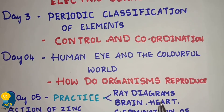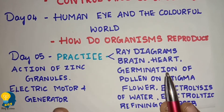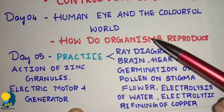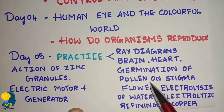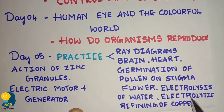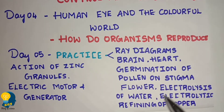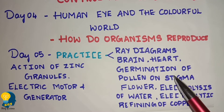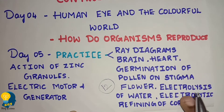Day five is for practice and revision. Practice all important diagrams: human brain, human heart, germination of pollen on stigma, flower, electrolysis of water, electrolytic refining of copper, action of zinc granules, electric motor, and electric generator. These diagrams are compulsory on day five. Practicing diagrams will give you confidence. Practicing diagrams can fetch you 12 to 14 marks completely.